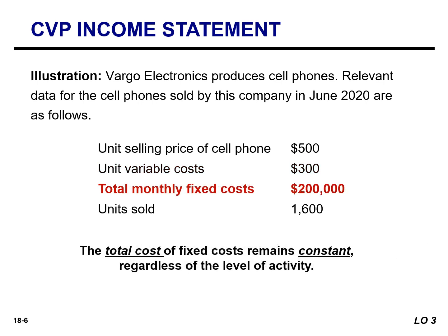Let's talk about fixed costs. These costs remain constant in total regardless of the level of activity. If we are selling 1,600 units, our fixed costs are $200,000. If we sell 2,000 units, our fixed costs will remain constant at $200,000.